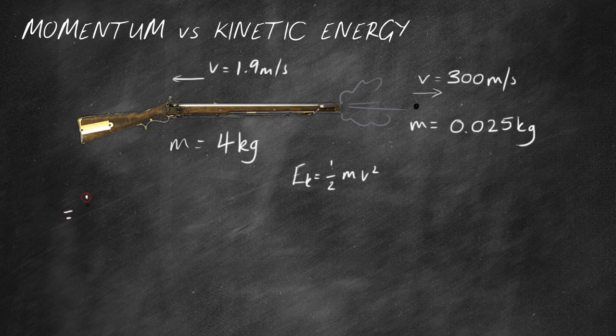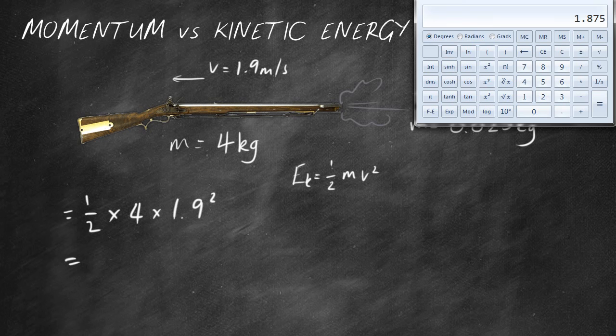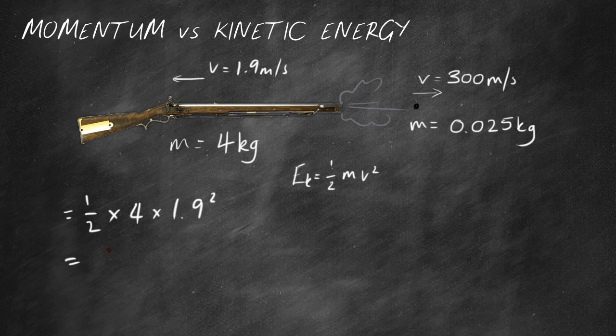So a half times the mass, 4, times 1.9 squared. Go for the calculator. 0.5 times 4 times 1.9 squared equals 7.22. 7.22 joules. Now that is not a large amount of energy and that is not likely to do you any serious damage.